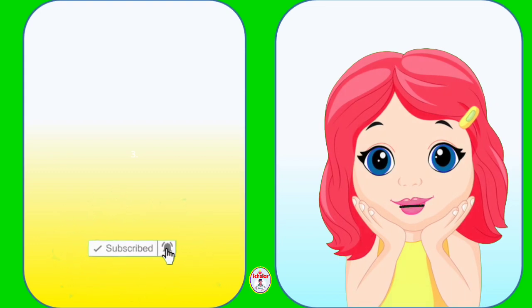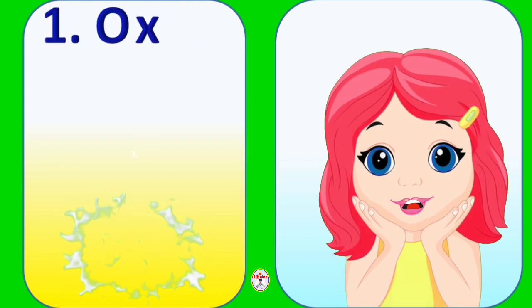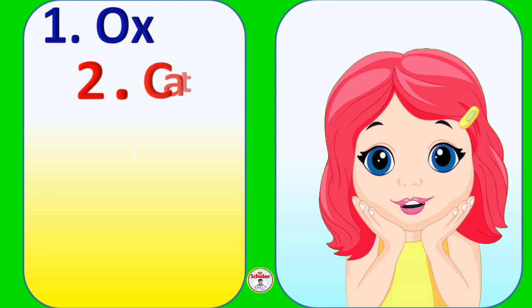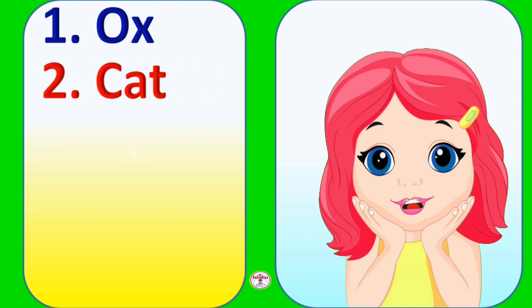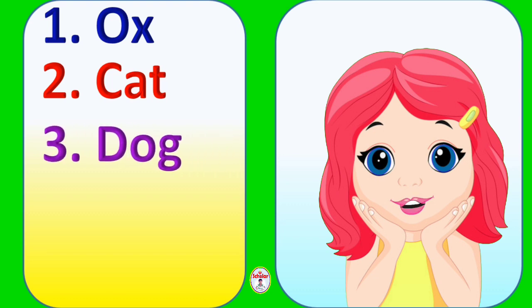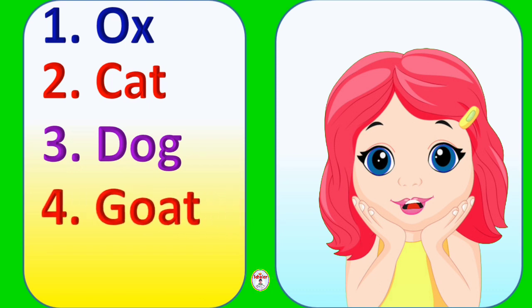First domestic animal name: ox (O-X), cat (C-A-T), dog (D-O-G), goat (G-O-A-T).